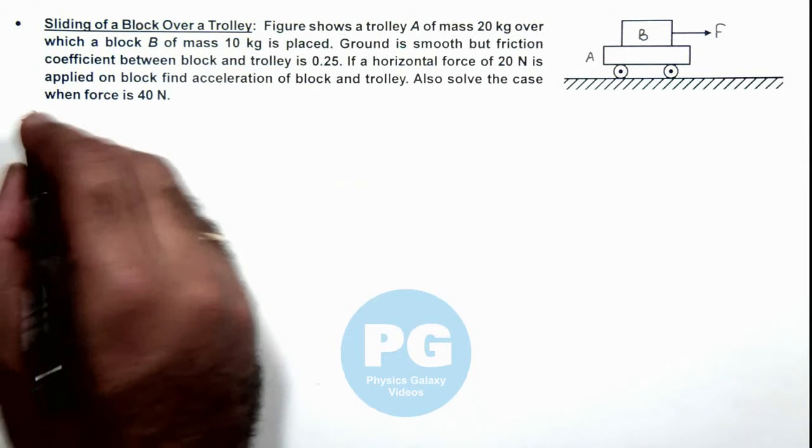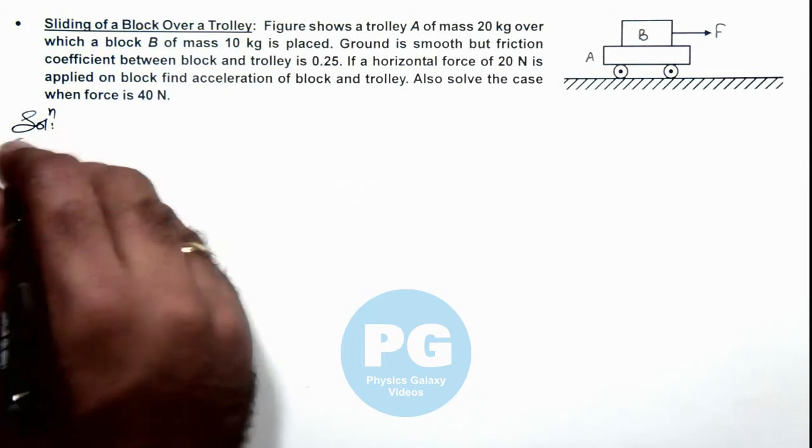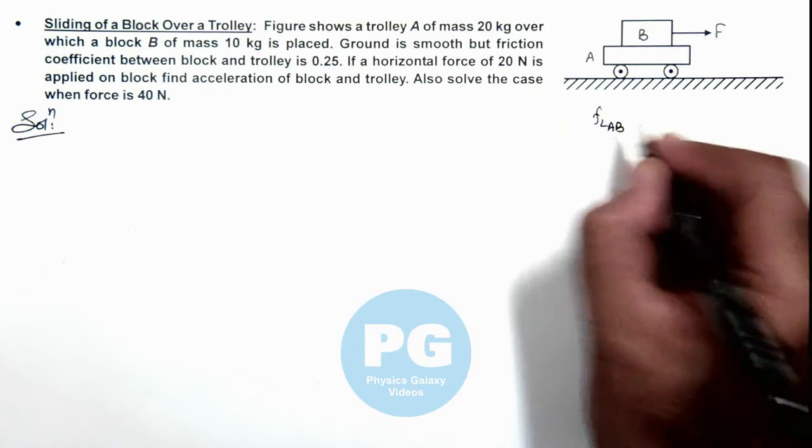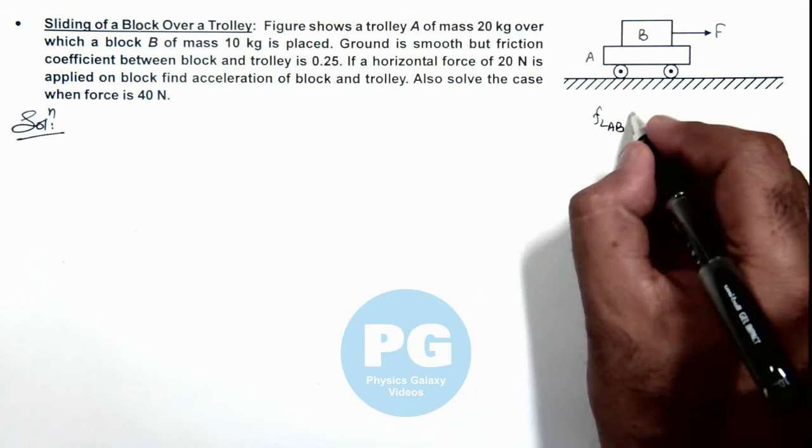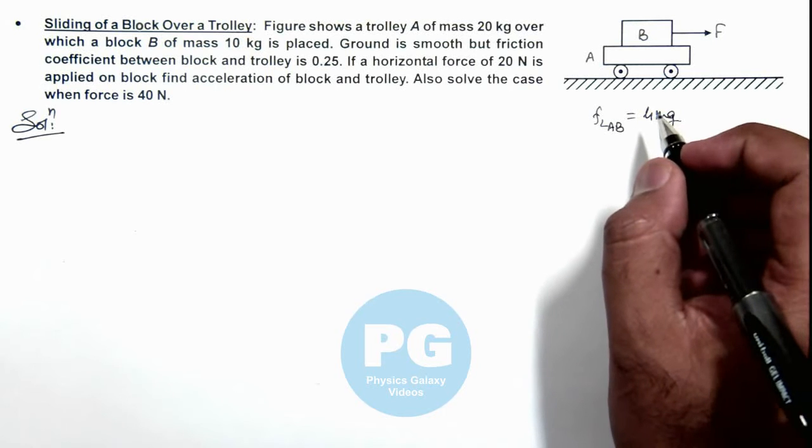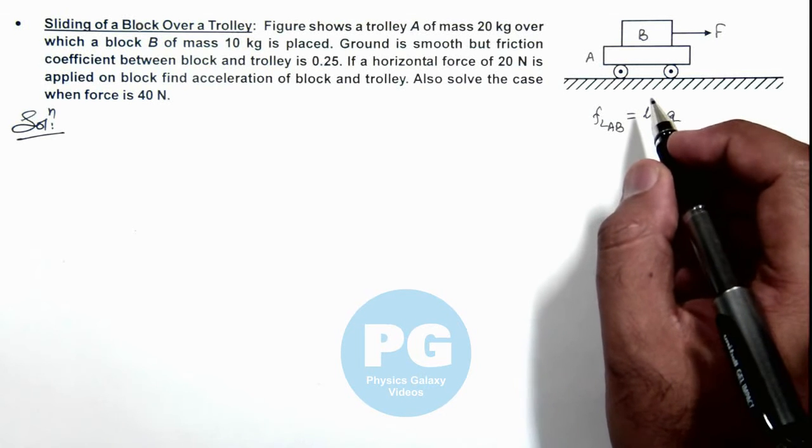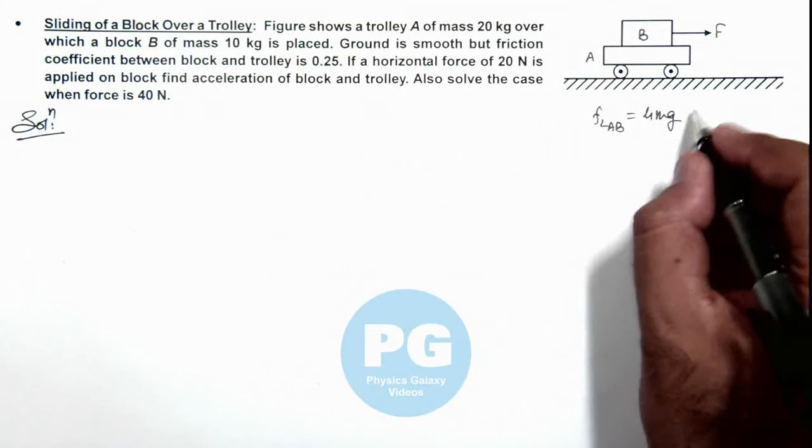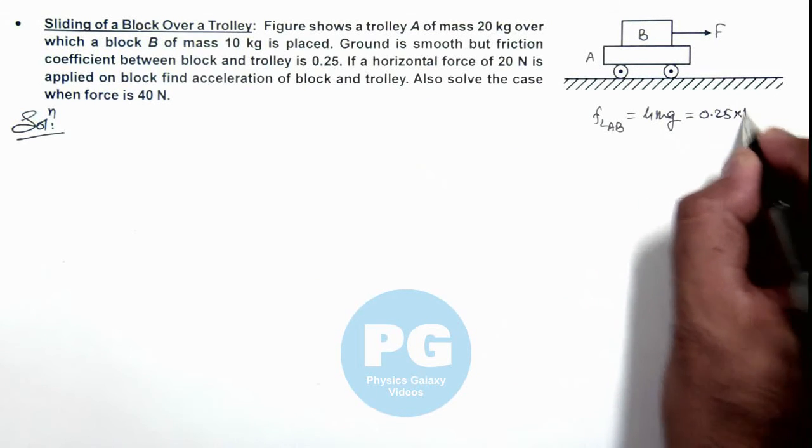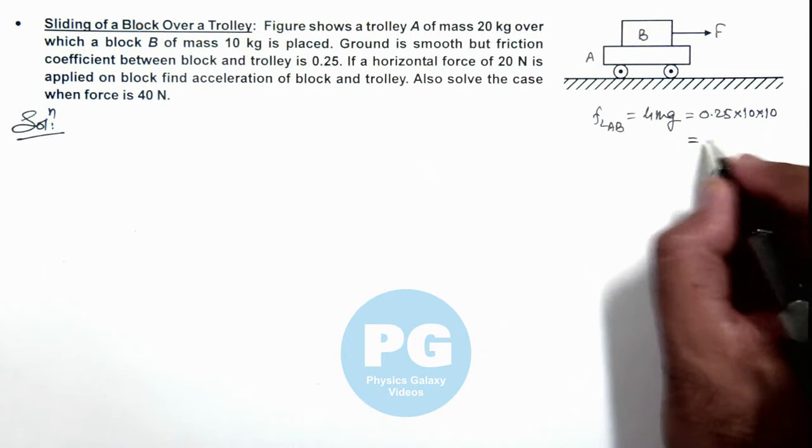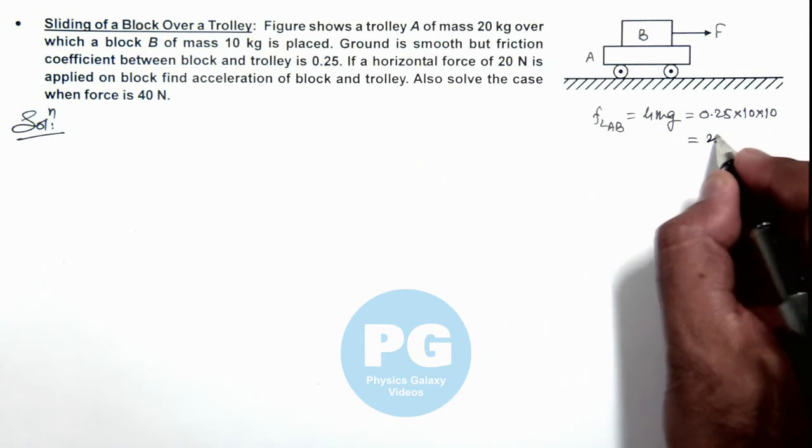Now to solve this situation first we analyze the limiting friction between block B and trolley A which can be written as μmg. We are given that mass of block B here is 10 kilogram and friction coefficient is 0.25. This can be given as 0.25 multiplied by 10 and g, so this will give us a value of 25 newton.